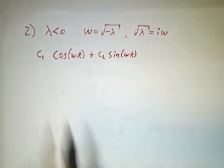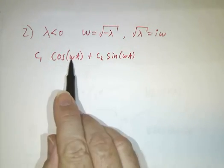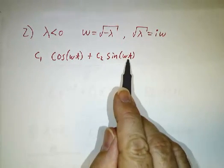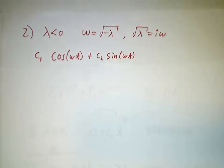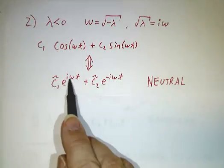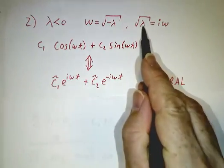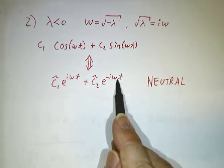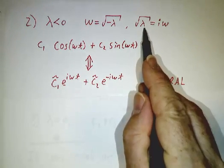And where we get the coefficient of the eigenvector is something times cos omega t plus something times sin omega t. Or we could just as well express it in terms of exponentials: e to the i omega t, that is e to the square root of lambda t, and e to the minus i omega t, that is e to the minus square root of lambda t.